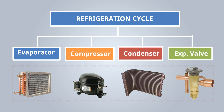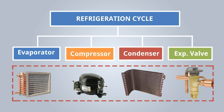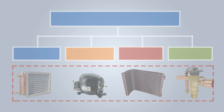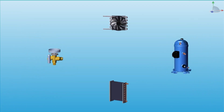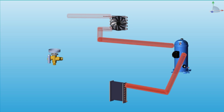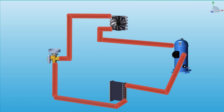It also has a few auxiliaries like a dryer, receiver, and different instruments. However, we will discuss the main parts of the refrigeration cycle to clear the basic concept. All the main units are connected by pipe — that is called a refrigerant pipe, and it is normally made of copper.